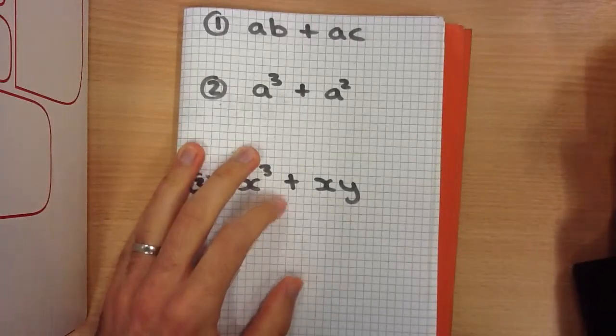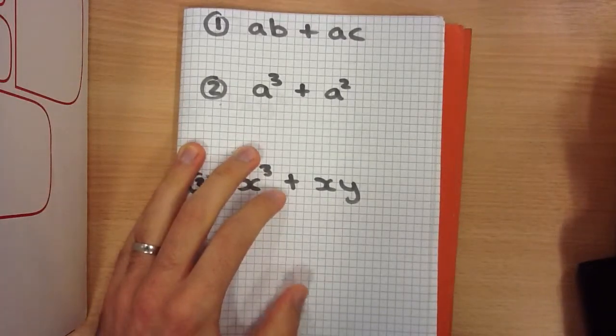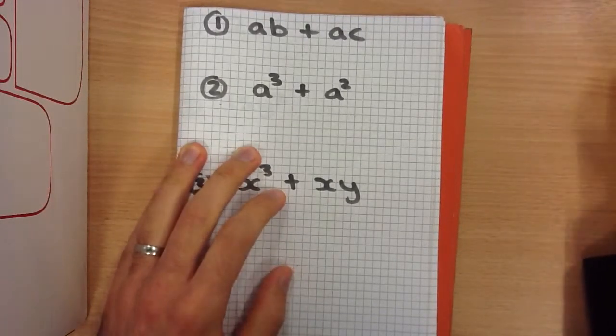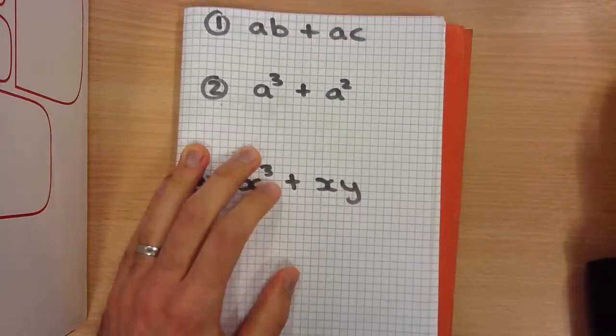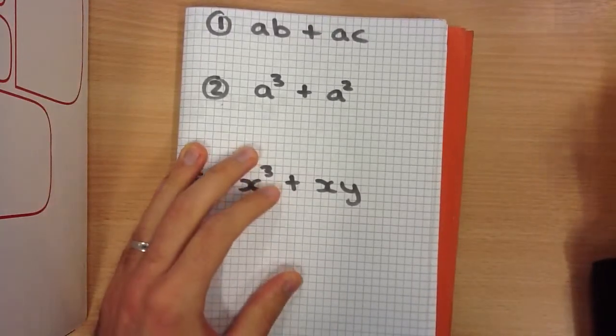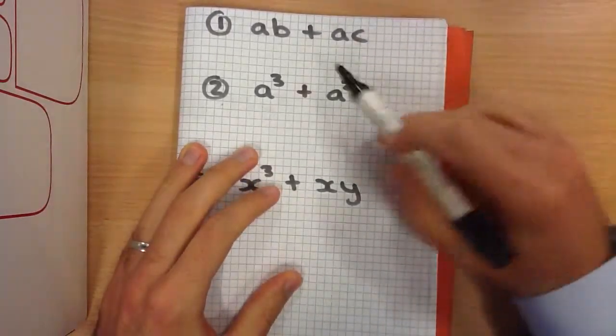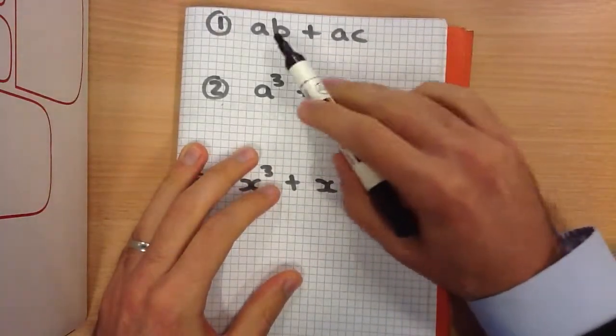This video is about factorising when a letter is our common factor. So just as with the number questions, have a look at this first example here.